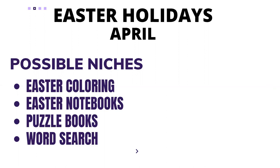So for Easter in April, you should start publishing your books in January or February. This is important because KDP takes about three months to index your keywords and properly assign your book category and all those things. So if you start publishing three months before the holiday, by the time the holiday comes, you are able to start making sales and monetize the holidays. If you start in March for an April holiday, you will not make much sales — maybe one or two, but not much.